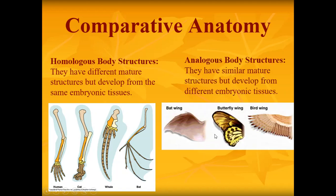Analogous structures mean they start different but end up looking the same. As embryonic tissues, they started with different tissue but end up doing the same job. Examples include the wing of a bat, a butterfly wing, and a bird wing. Remember: homo means same, so homologous started as the same embryonic tissue, while analogous started from different embryonic tissue.